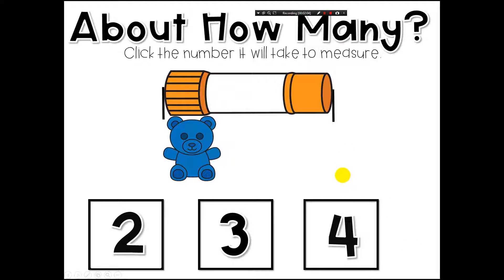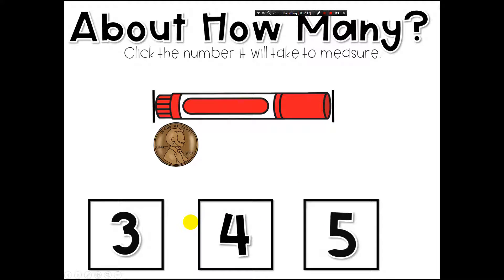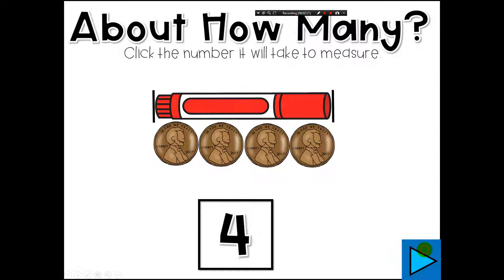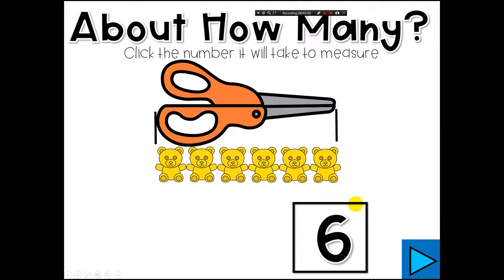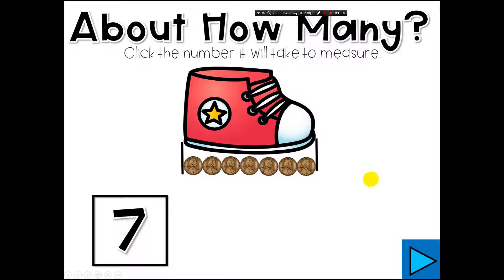Again, if they click incorrectly they will know, and when they click correctly they will see it and be able to count it out. This game will continue this way until students reach the end. When students reach the end they will have a positive reinforcing slide and then they will get to either start over or escape and go to the next one.